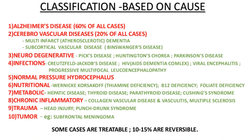When classifying based on the cause of dementia, the majority is Alzheimer's disease, which accounts for about 60% of all causes, followed by cerebrovascular disease making up 20%. Other causes include multi-infarct and subcortical vascular disease such as Binswanger's disease. Then comes neurodegenerative diseases such as Pick's disease, Huntington's chorea, and Parkinson's disease.